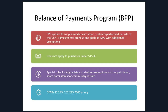Moving on from Buy American, let's discuss some tangential and related clauses. If you are working overseas, the balance of payments program applies. It's a Buy American Act-type law that applies to work being done outside the United States — so this would apply to companies working in the Bahamas or anywhere else other than the U.S. It's very similar to BAA except it has a few additional exemptions we don't need to cover on this webinar.